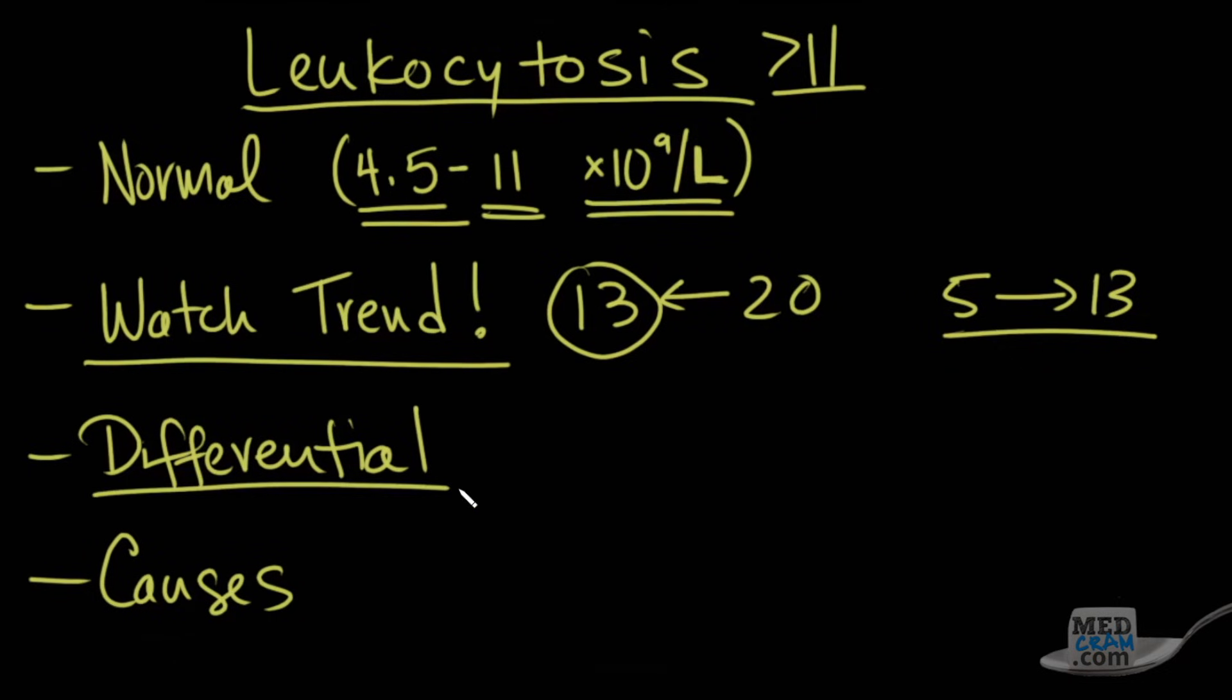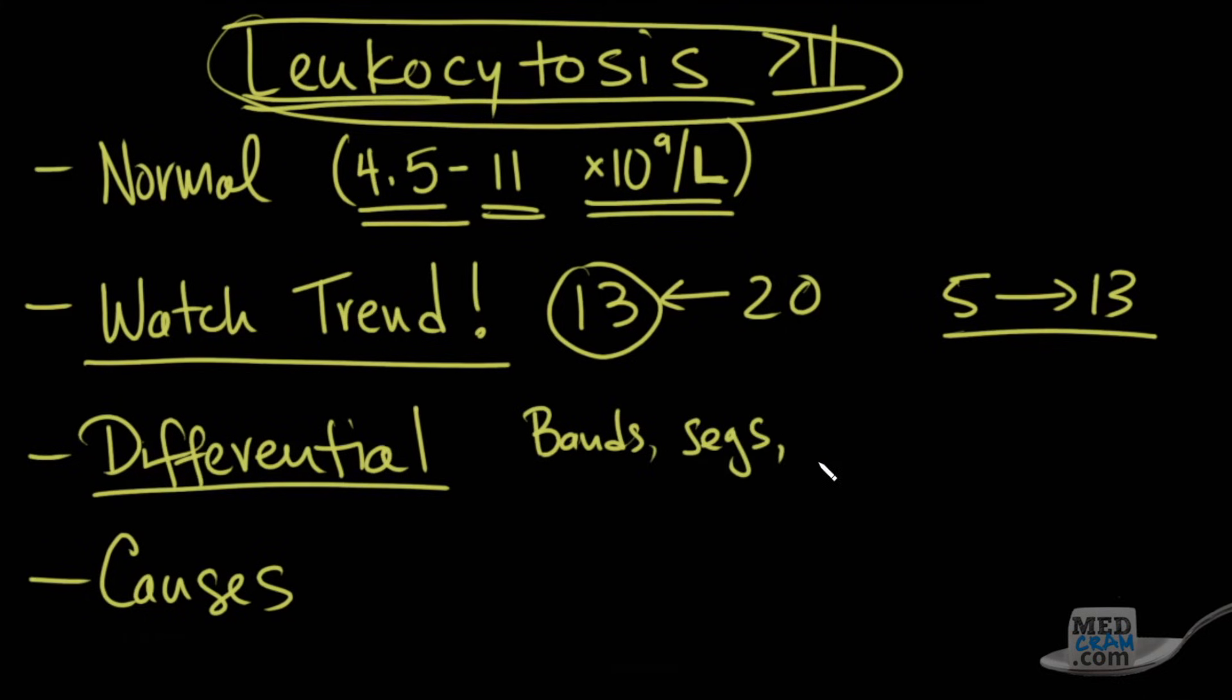And then differential. The white count, as you may know, are white blood cells. That's what the leuko means—that's white. These white blood cells are part of your immune system, but they're actually a collection of other cells. There are bands, segmented neutrophils—we call those segs—and these all sort of make up your neutrophils.